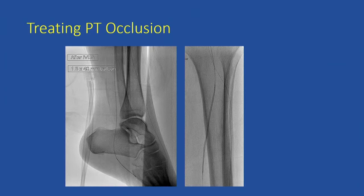Following successful externalization and reversing the wire, we treated with plain angioplasty. I performed IVUS before angioplasty and was disappointed that the lateral plantar artery was only 1.5 millimeters and the posterior tibial artery was only 2.0 millimeters. Nonetheless, those were the balloon sizes we used: a 1.5-millimeter balloon in the lateral plantar artery and a 2-millimeter scoring balloon throughout the length of the posterior tibial artery.